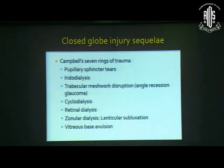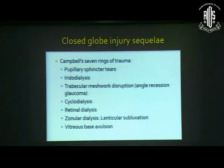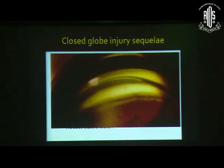The second ring is iridodialysis, in which there is disruption of the iris from its base or root, producing a D-shaped pupil. The next one is angle recession, in which the iris becomes retroplaced. There is an increased distance between the trabecular meshwork and the iris, and an enlargement of the ciliary body band.